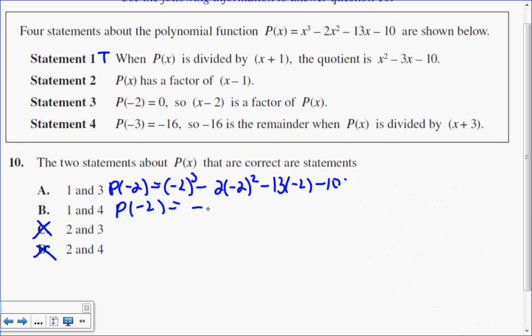So negative 2 cubed is negative 8, minus 2 times negative 2 squared is 4. Negative 13 times negative 2 is 26, take away 10. Of course, you could put this all into your calculator. I just want to show you how the steps work.